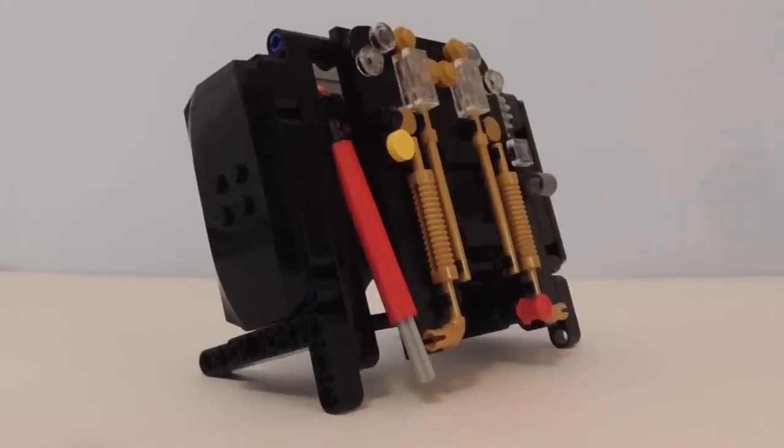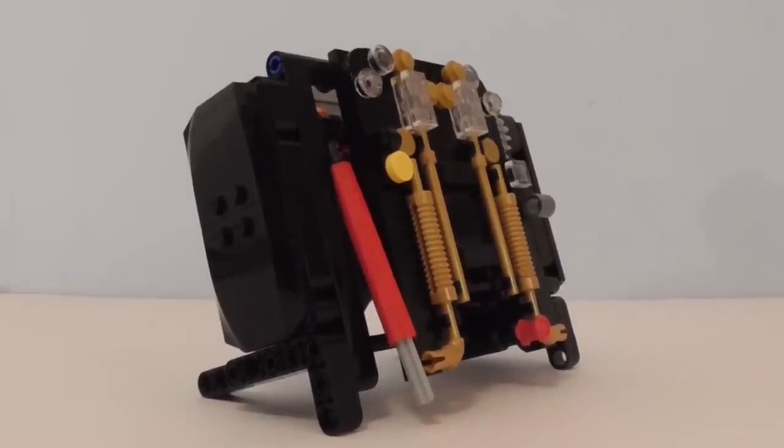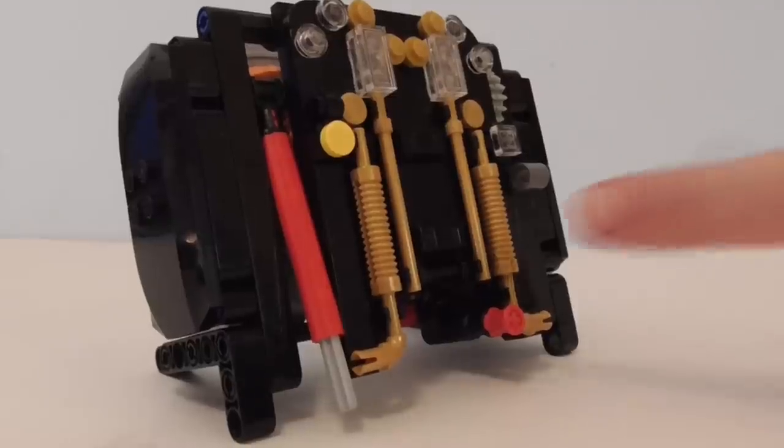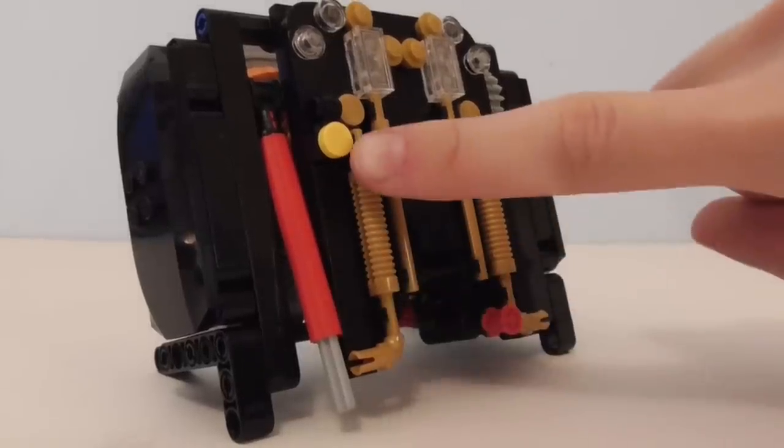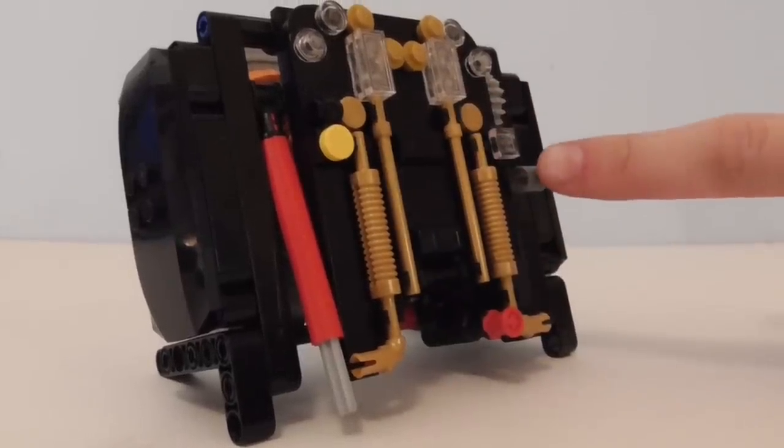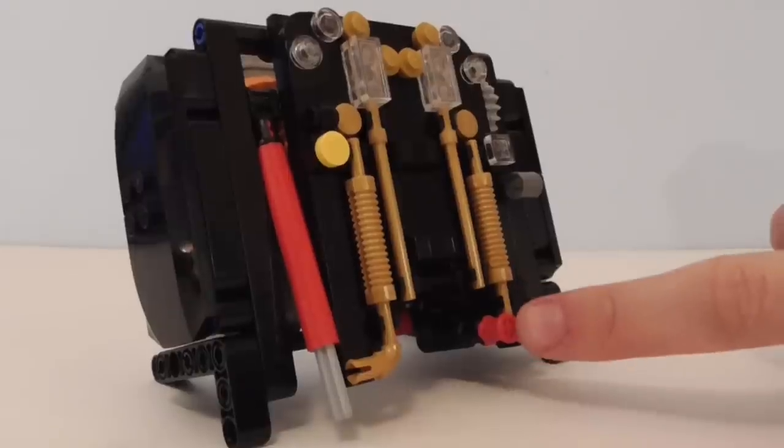The idea here is to change the different functions of the controller to how they would appear in the cab of a steam engine. For example, the speed dial becomes the regulator here, the stop button becomes the brake lever, and the polarity switch becomes this reverser.